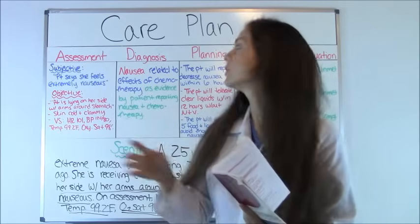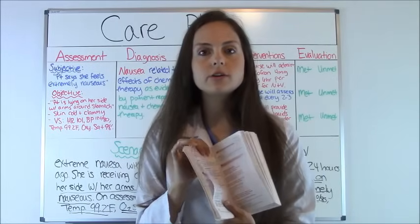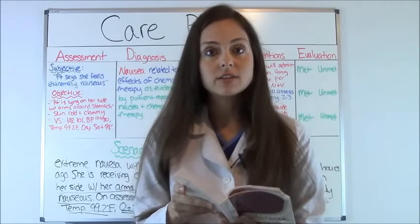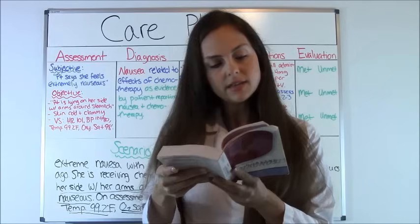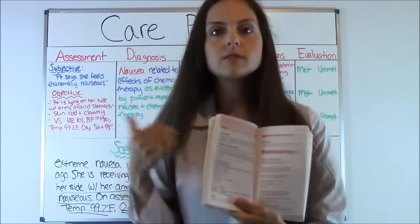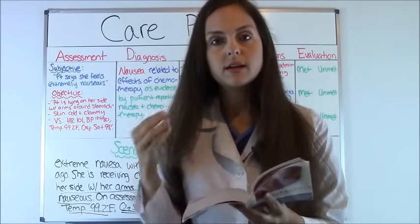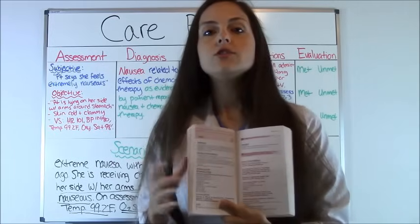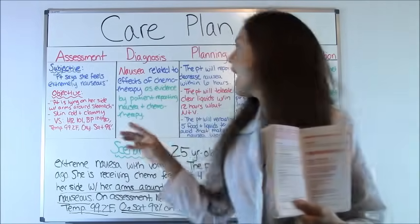We're going to put nausea as the diagnosis since we've met that criteria. Now we look at the related to part, which also comes from your nursing diagnosis book — you copy it verbatim. In the book under related factors, this patient's nausea is 'related to effects of chemotherapy.' For comparison, if the patient had a GI bug, the related to part would instead read 'related to gastrointestinal irritation secondary to acute gastroenteritis.' So both the diagnosis and the related to part come directly from the book.